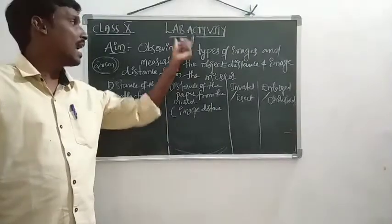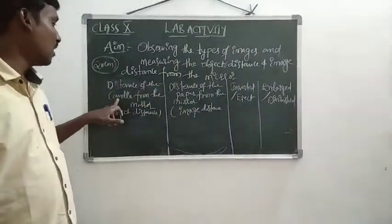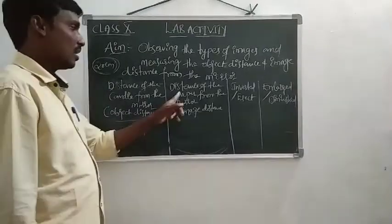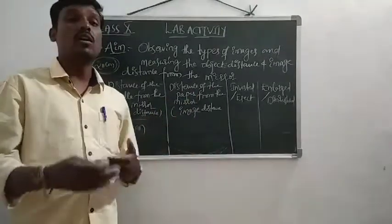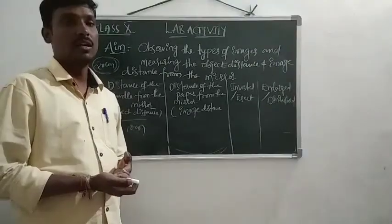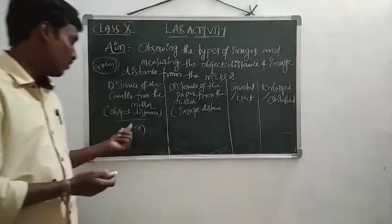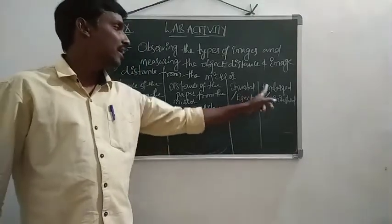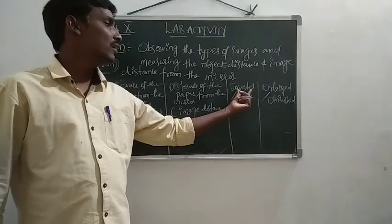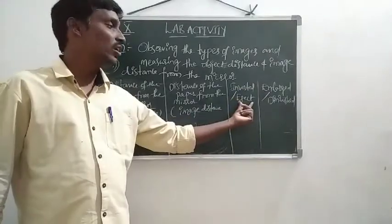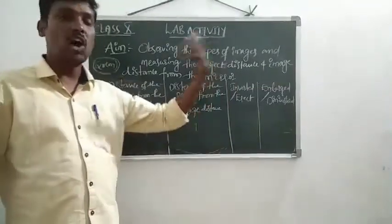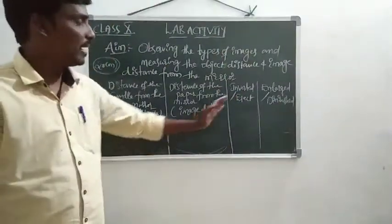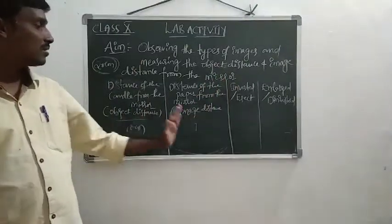During the lab activity, maintain the table. The first column is the object distance — the distance of the candle from the mirror. Find the position of the paper where you get a sharp image on the screen — that gives the image distance. Also record the characteristics of the image: inverted or erect, enlarged or diminished compared to the object.